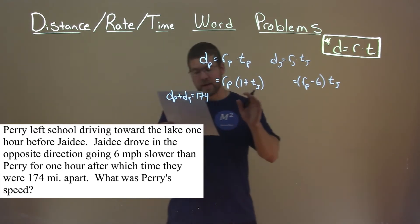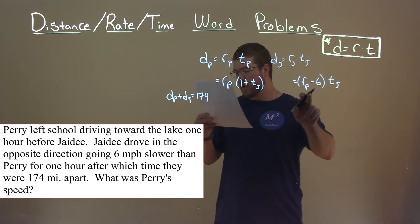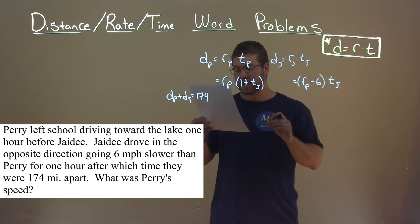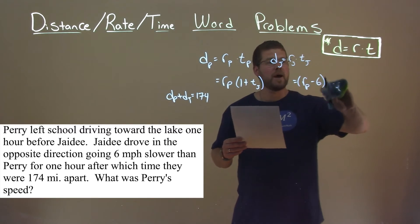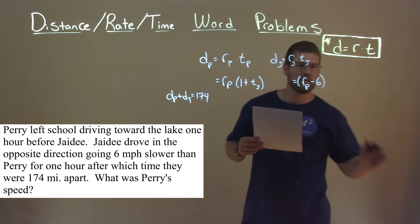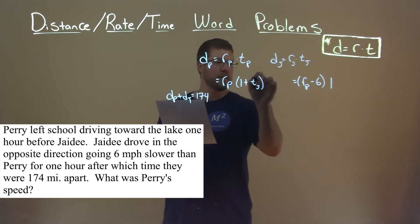There's actually one more thing I missed. Let me make sure I catch it here. They said JD drove the opposite direction going 6 miles per hour slower than Perry for 1 hour, after which time they were 174 miles apart. So JD was only driving for 1 hour right here. Meaning we can figure that out here, this time of JD is just 1.